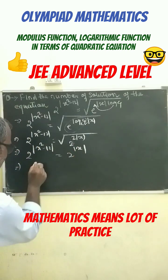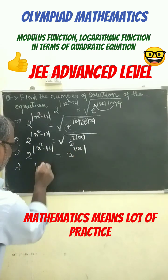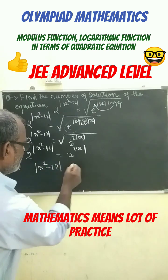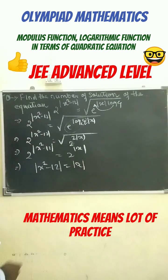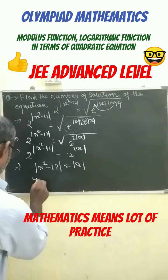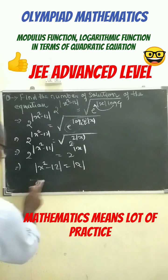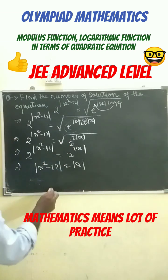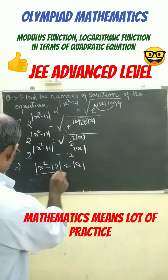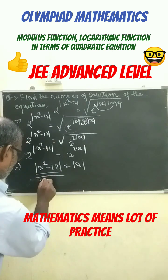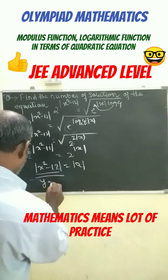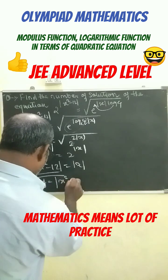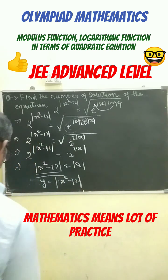From here we get that mod x squared minus 12 equals to mod of x. Now let us go with the graph. We will do the graph: y equals to mod of x squared minus 12.